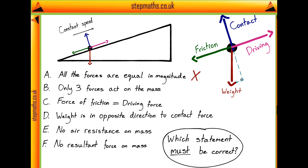Looking at statement B, we can straight away see this is not necessarily true. The question doesn't state there is no frictional force, and if there is friction then statement B certainly isn't true. We could have no frictional force at all, in which case the driving force would equal the parallel component of weight — that would be a perfectly reasonable system — but it just doesn't have to be true, and the statement asks which must be correct. So B is also false.